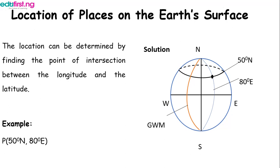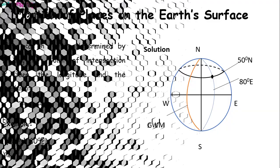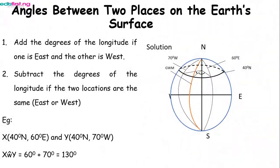Now, angles between two places on the earth's surface. There are two things we need to always take note of. First, if the degrees of longitude are — one is east and the other is west — add the degrees. Second, subtract the degrees of longitude if the two are in the same direction, that is either both east or both west.